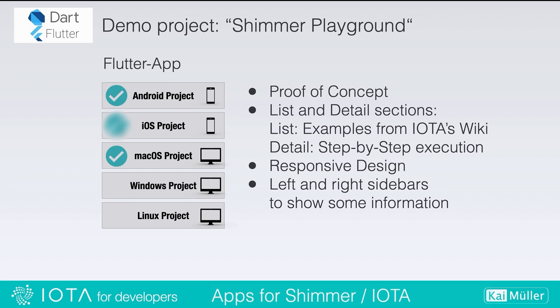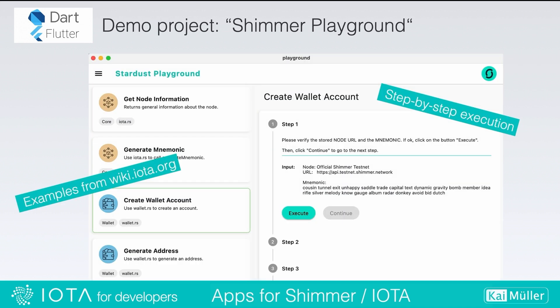The Shimmer Playground app is a Flutter app with a list and a details section. My idea was to run some Rust examples from the wiki inside of an app. The list contains different examples you can choose, each using one or more Rust libraries. In the details section, the selected example can be tried out. I implemented a generic stepper to make step-by-step execution possible.